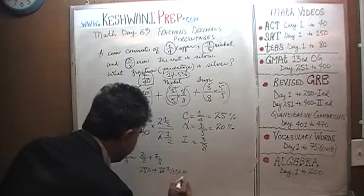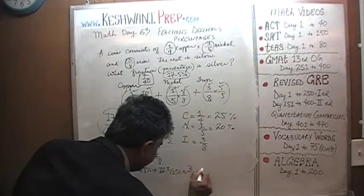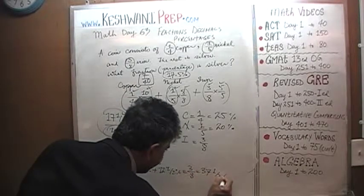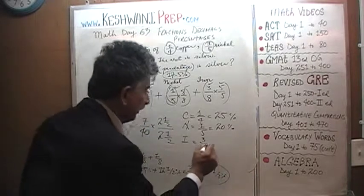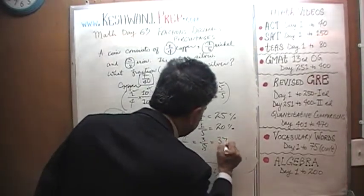Now, it turns out that 3/8 is 37.5%. Let's put it here: 37.5%.